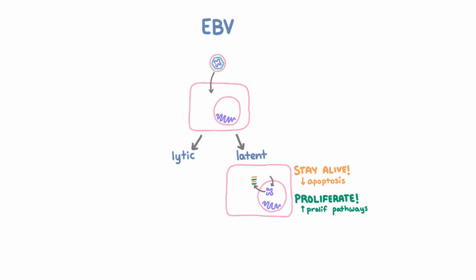So this is actually quite smart of the virus. Now there is a downside to producing these viral proteins during latency, which is that cytotoxic T cells can still recognize and kill latently infected B cells. Nevertheless, by the end of an acute infection with EBV, there will be a small population of latently infected B cells that escapes the immune system and survives long-term as the immune response dials down.